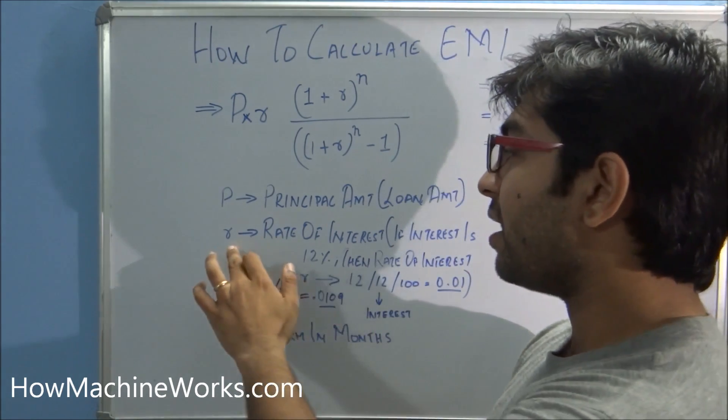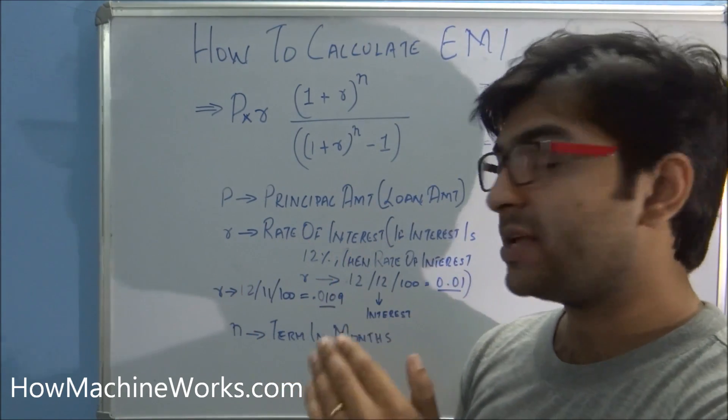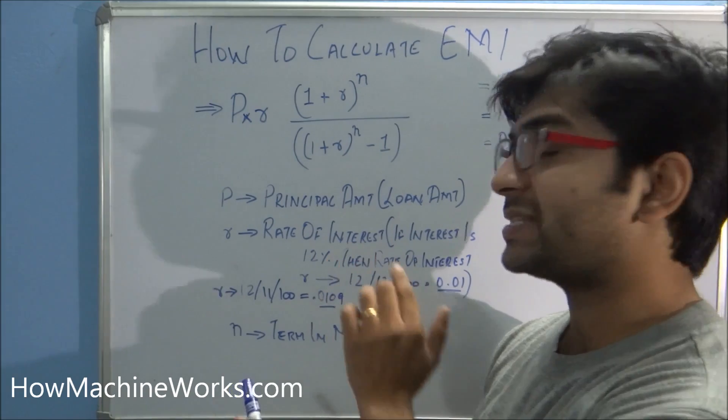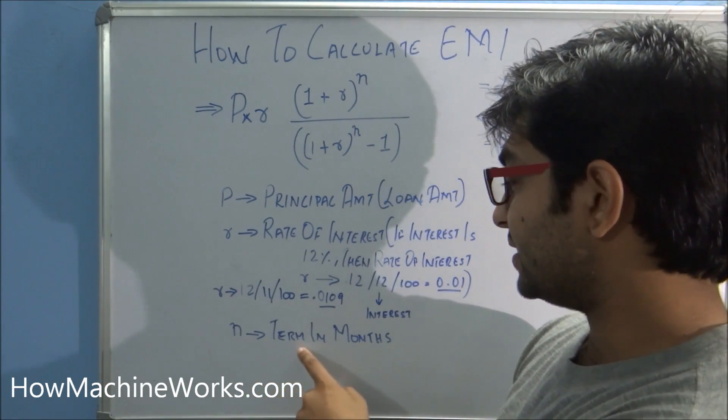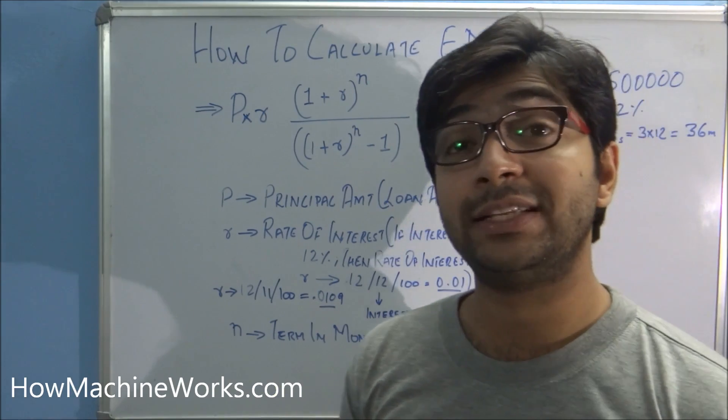And R is the rate of interest, so we're taking the rate of interest as 12 percentage. And N is the term of months for which we are going to take the loan, that is 3 into 12 for 3 years, that is 36 months.